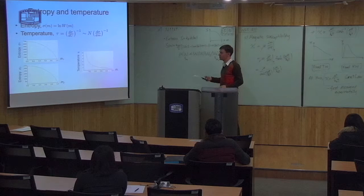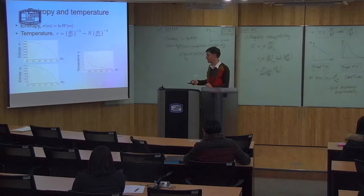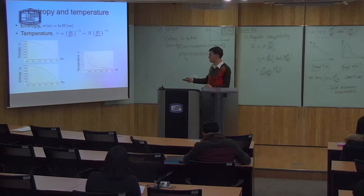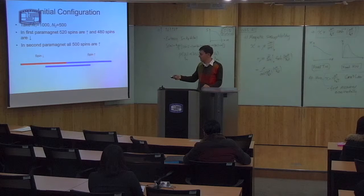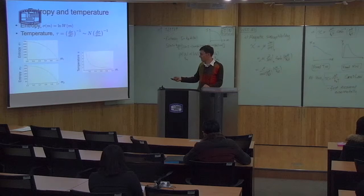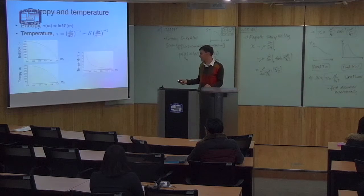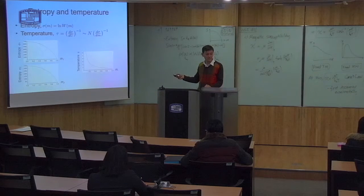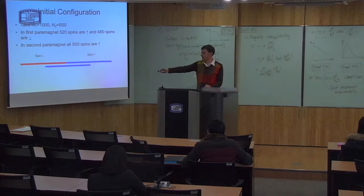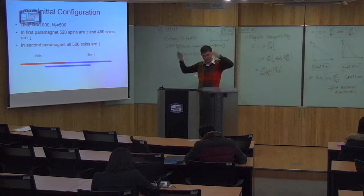The entropy is high at low magnetization and low at high magnetization. Temperature is low at high magnetization and high at low magnetization. So initially, paramagnet two — which starts with magnetization 1 — has temperature zero. Paramagnet one starts roughly half-and-half, so its magnetization is near zero and its temperature is very high. When we join them, one is at high temperature and one is at low temperature — we expect their temperatures to equalize.